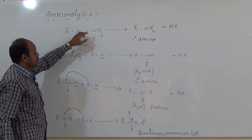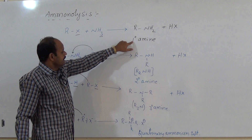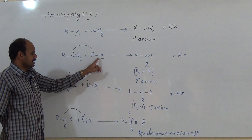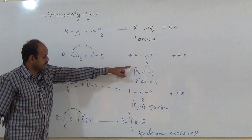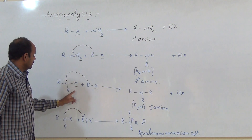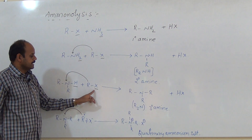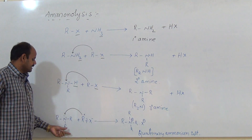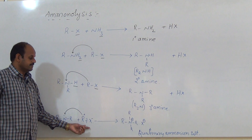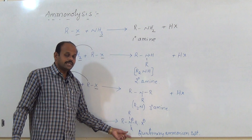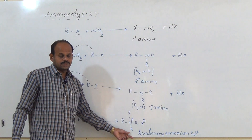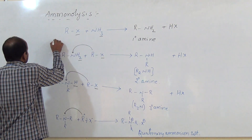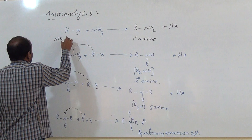The primary amine reacts with one more alkyl halide to give secondary amine. The secondary amine again reacts with alkyl halide to give tertiary amine. And the tertiary amine reacts with one more alkyl halide to finally give the quaternary ammonium salt.